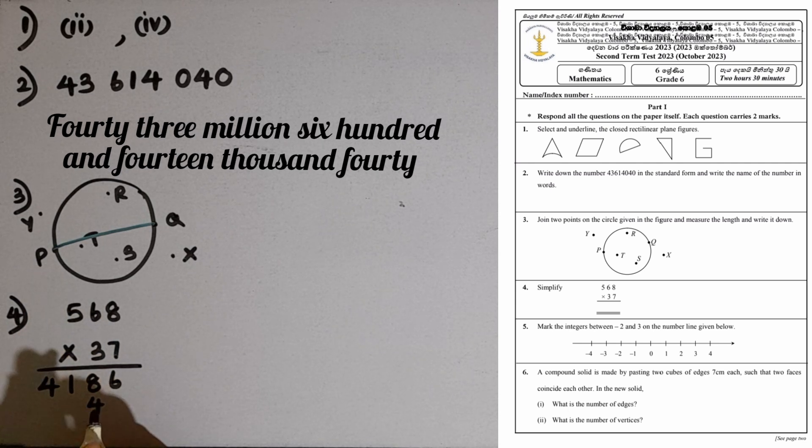Now we have to multiply by 3. 3 times 8 is 24, 2 remaining. 3 times 6 is 18, plus 2 is 20, 2 remaining. 3 times 5 is 15, plus 2 is 17.